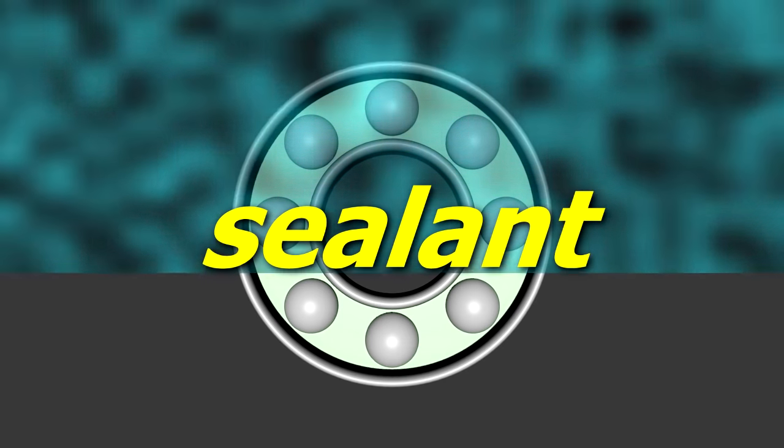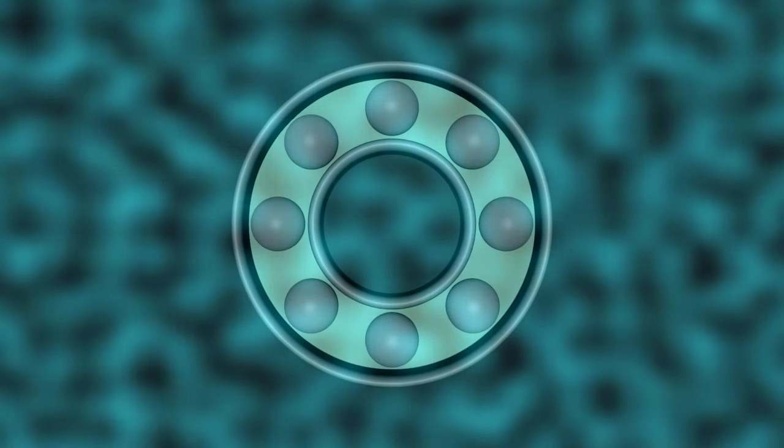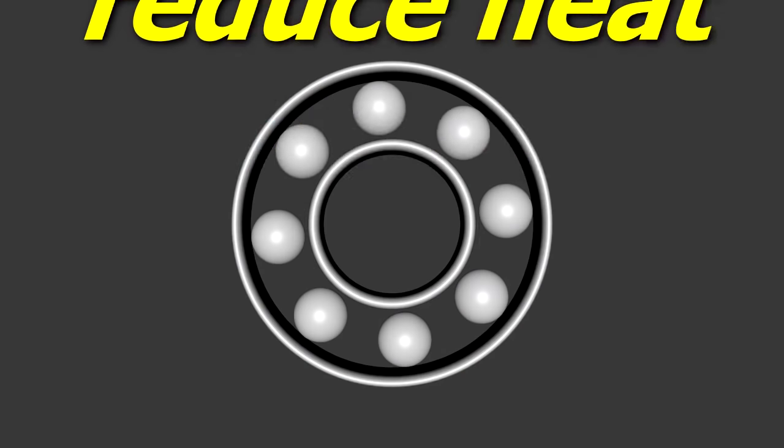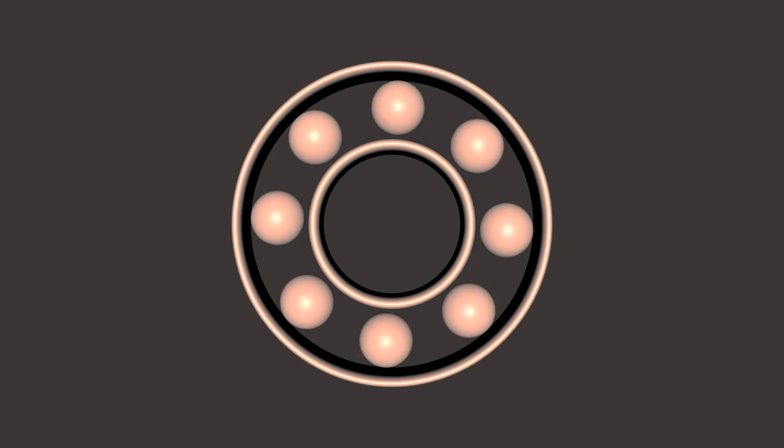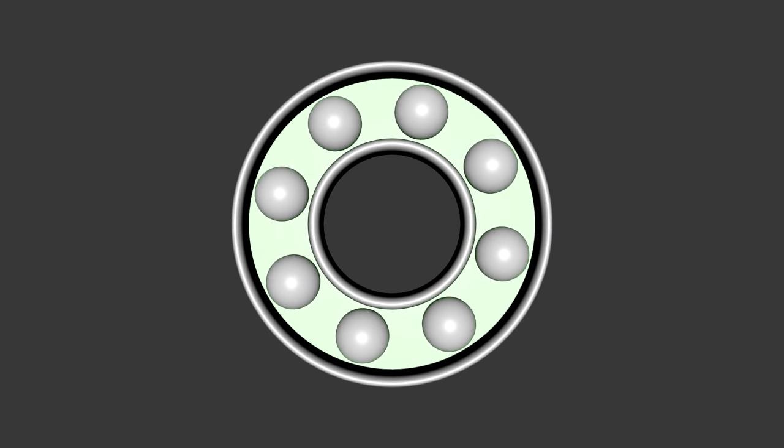Another reason is that grease acts as a sealant to help prevent water and other materials from getting in between the parts. If the metals are contacting each other at high speed, then they could heat up, causing damage over time. Grease reduces that heat build up, and helps move the heat away.